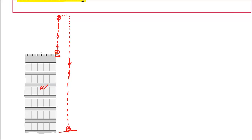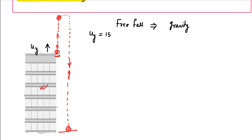This is a case of free fall. Free fall means the acceleration of the ball is due to gravity alone, so we can apply constant acceleration. The value of gravitational acceleration is 9.8 meters per second squared. The initial velocity given is 15 meters per second upward, that is u_y is given, and the acceleration a_y is 9.8 meters per second squared.